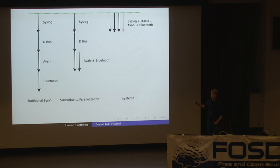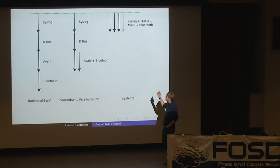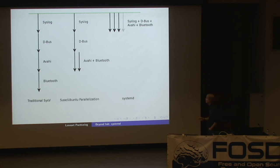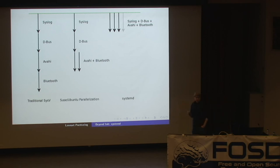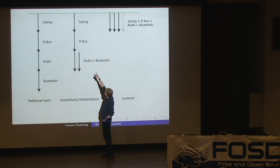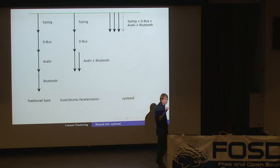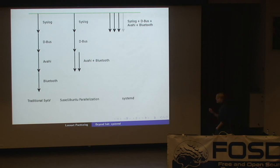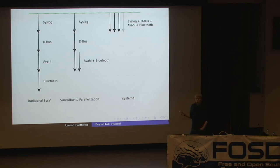In systemd, we actually start all four completely in parallel. That's surprising — how can we do this, since there is still a dependency between syslog and D-Bus, and between Avahi and D-Bus? This technology is called socket-based activation. It's something Apple pioneered in LaunchD, the core part of the macOS operating system. They looked at these boot-up graphs and asked: why exactly does Avahi have to wait for D-Bus and syslog? What is the one thing that is being waited for? And they noticed it's about the sockets.